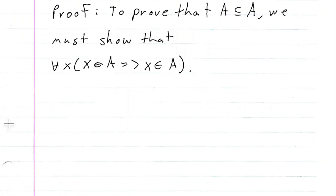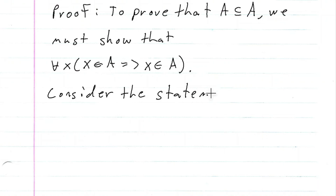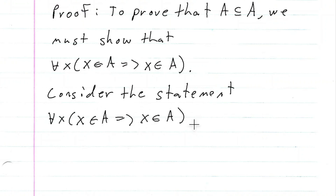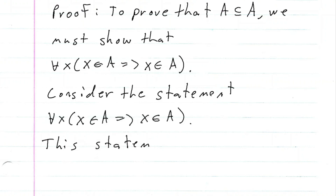So let's consider this statement: for every X, if X is in A, this implies that X is in A. We know that this statement is a tautology because P implies P. If we have this conditional statement, P implies P is always true. So this statement is a tautology.